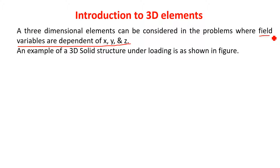Field variable means unknown variables. If you remember the first class, we had discussed different types of field variables for different types of problems. For example, for the solid mechanics problem, field variables are joint displacement, translation and rotations. When applying FEM to fluid mechanics, field variable will be in terms of velocity of fluid. Similarly, field variables will be temperature when solving heat transfer problems. So, when those field variables are dependent on all three coordinates x, y, z, three-dimensional elements are used to discretize the structure.